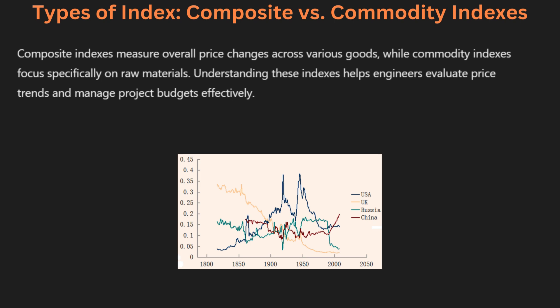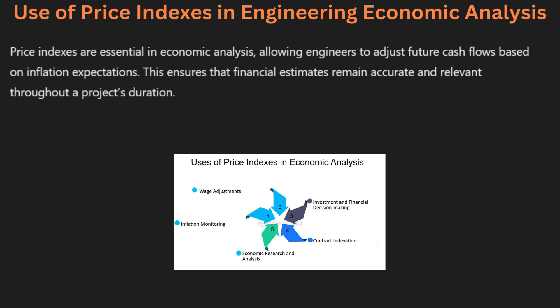A commodity index focuses specifically on prices of raw materials such as metals or agricultural products. This index helps engineers understand price trends in a specific sector. For example, a commodity index can indicate rising costs in construction materials. Knowing the difference between composite and commodity indexes helps engineers decide how to adjust their budgets. Engineers can use this information to forecast future expenses based on trends in commodity prices, gaining insight into cost fluctuations.